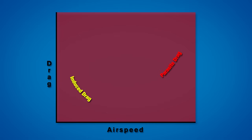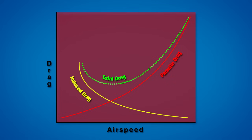If we take both induced and parasite drag, plot them on a graph, and add them together, we get a new curve representing total drag. The lowest point on the total drag curve shows the airspeed at which we make the most amount of lift and the least amount of drag.